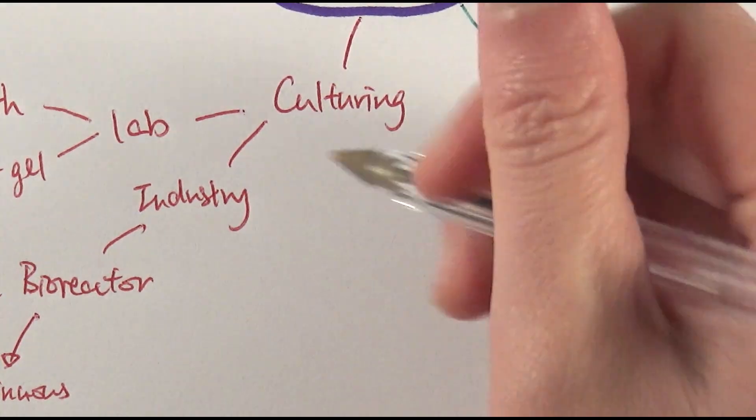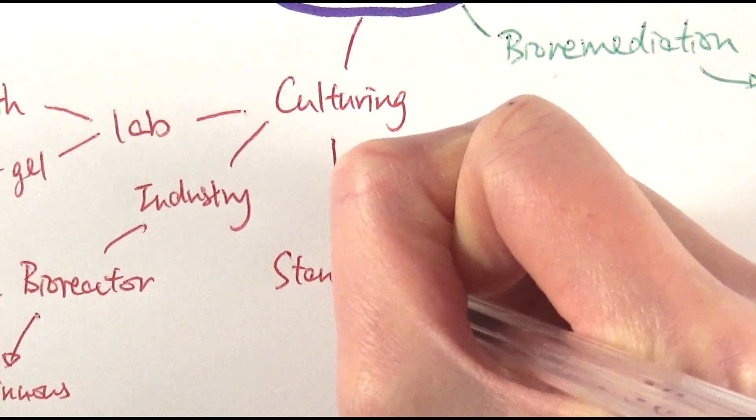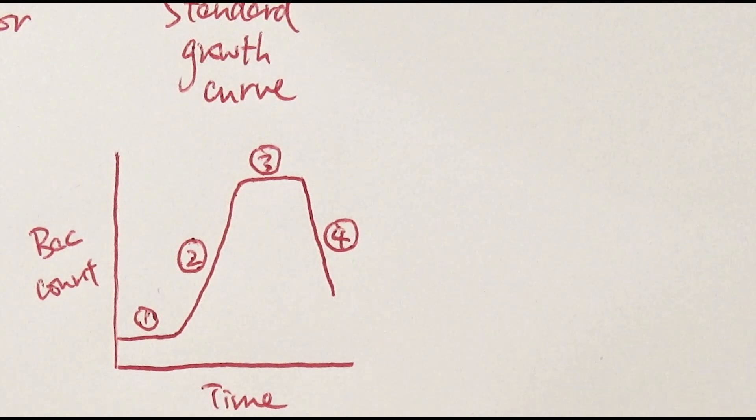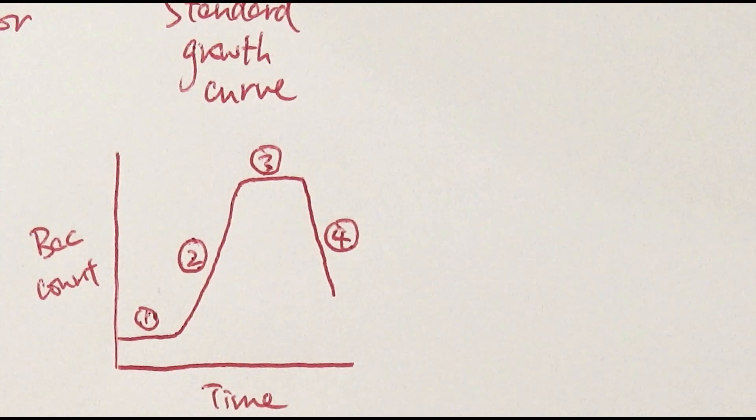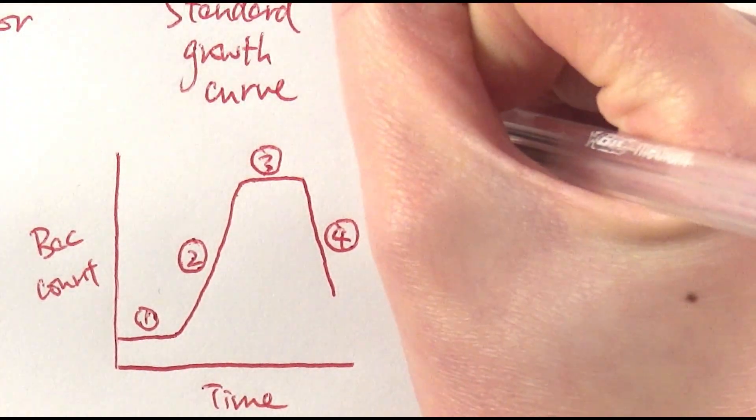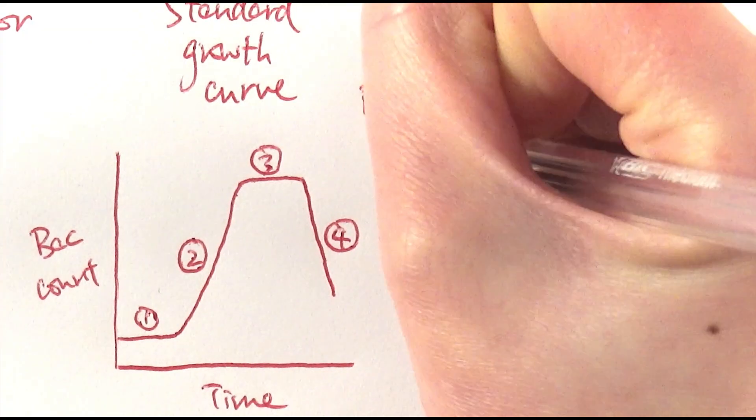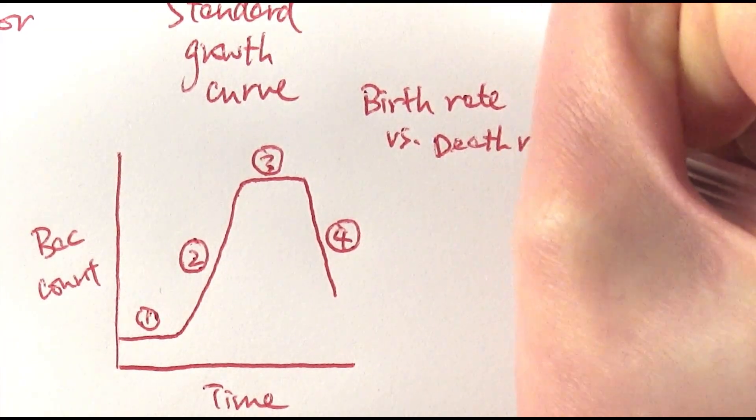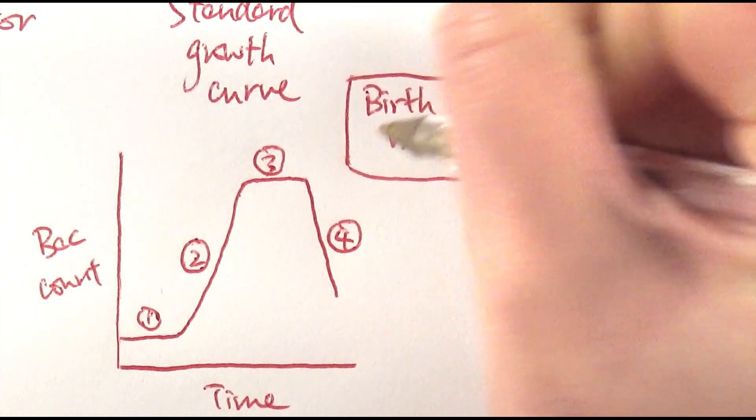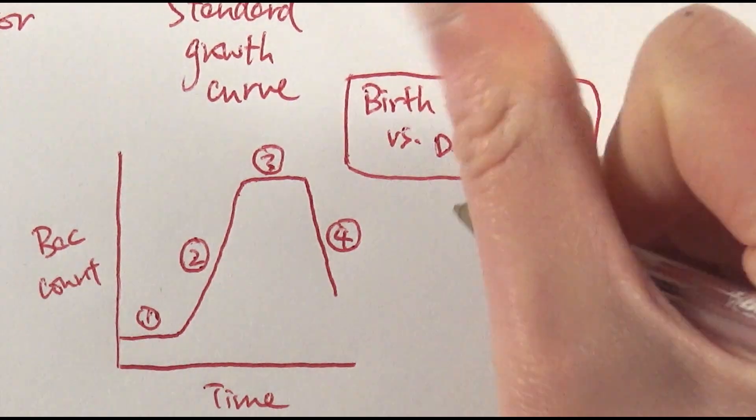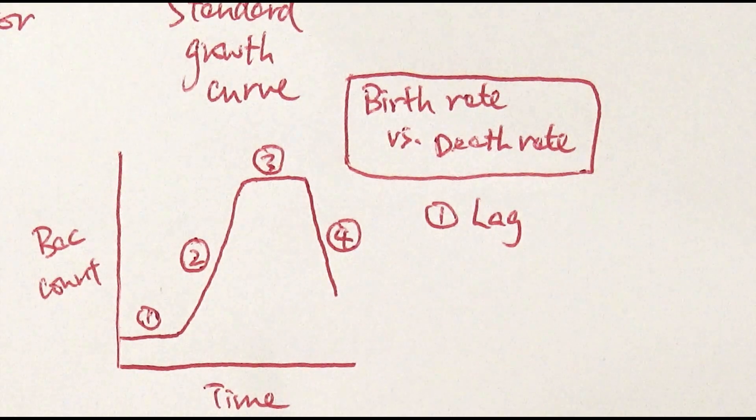One major part about culturing you need to be very clear about is the standard growth curve. These are the four different stages of the standard growth curve. You need to know what they are and be able to explain why that is the case. One key thing when explaining the different stages is always comparing the birth rate and the death rate. The first stage is the lag phase, meaning the birth rate and death rate is about the same. That's why it's flat, because the microorganisms are still getting used to the environment. The bacterial count doesn't change much.